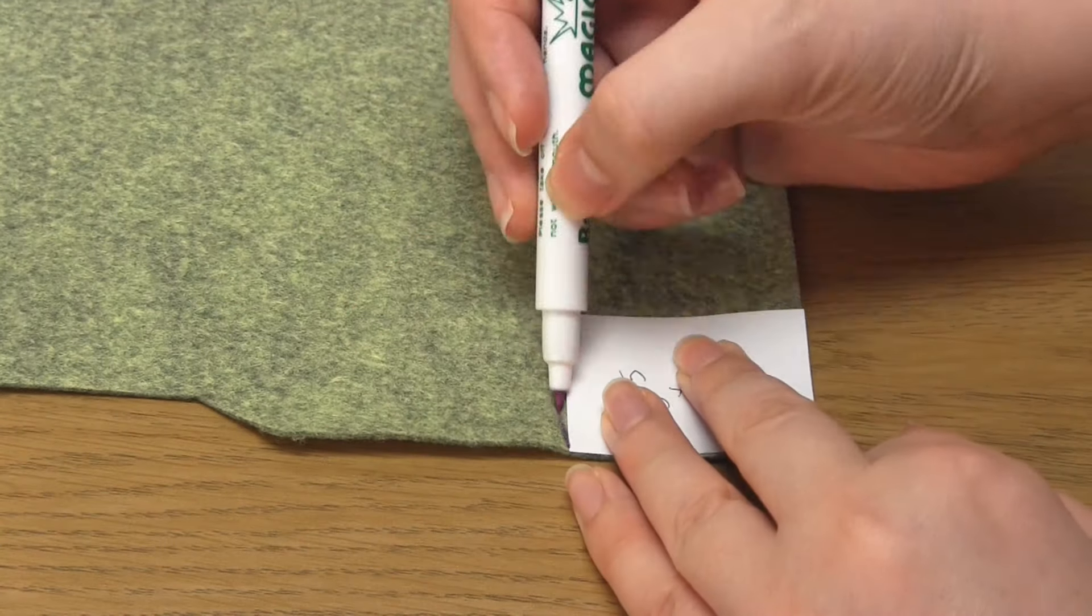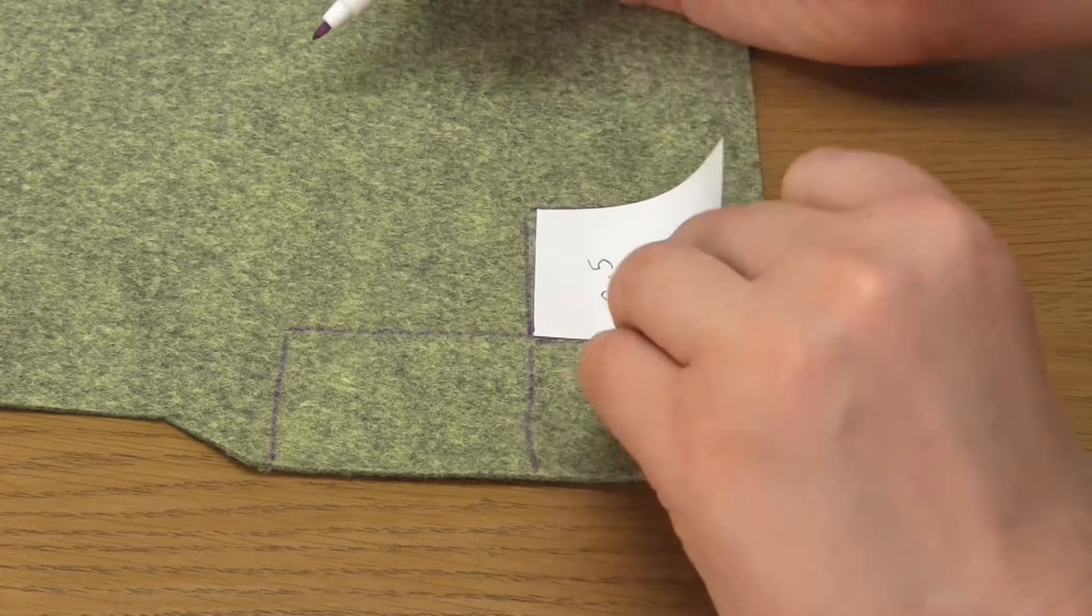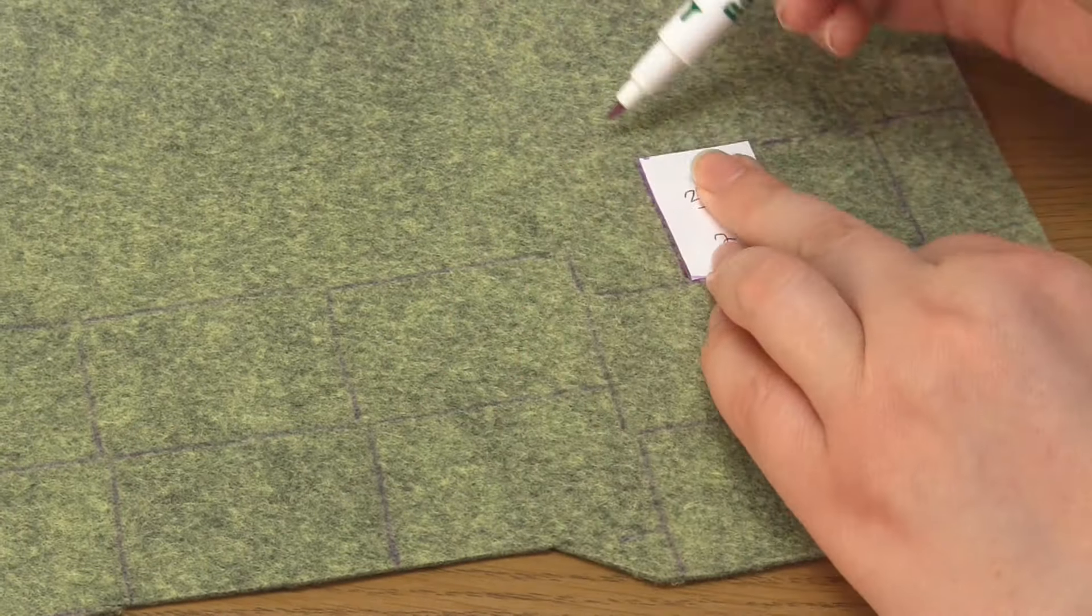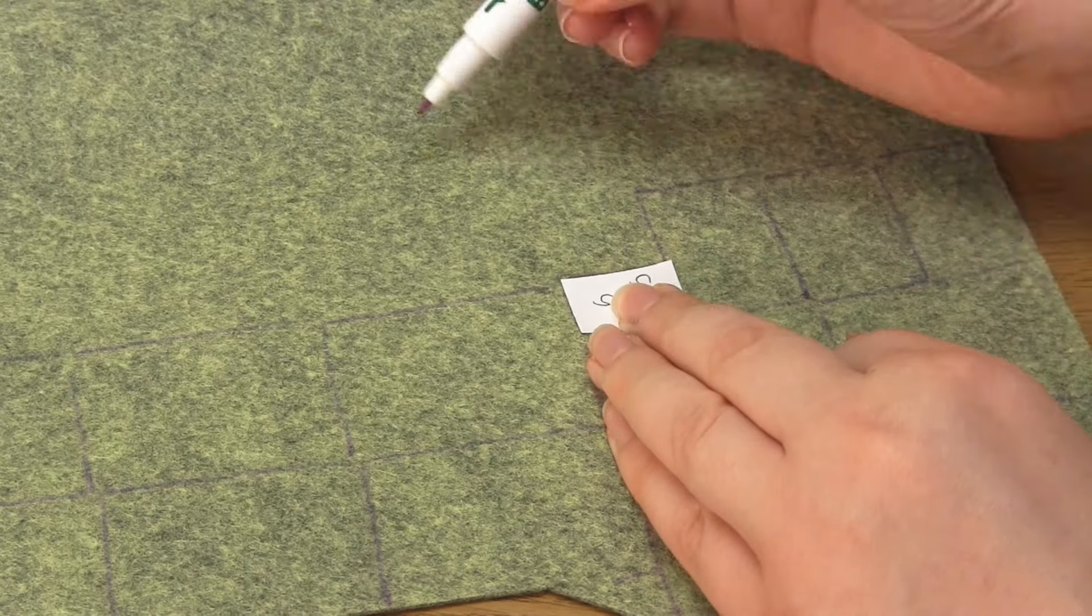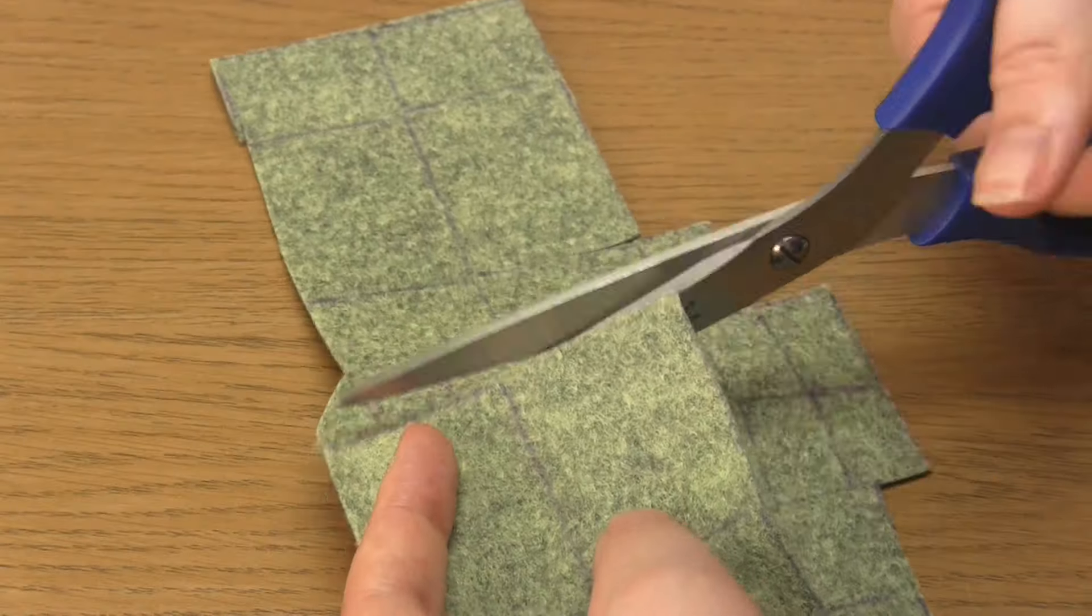Then use a fabric pen to draw around these templates onto your felt. You're going to need 8 of the largest size, 4 of the medium size and 6 of the smallest size. Then cut these rectangles out.